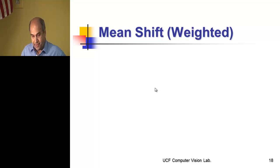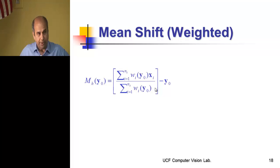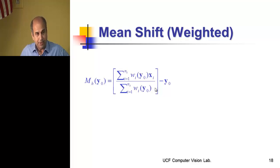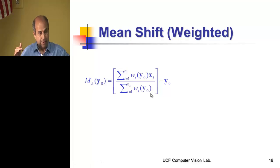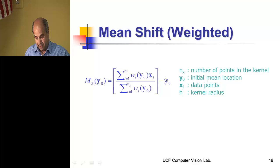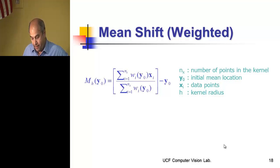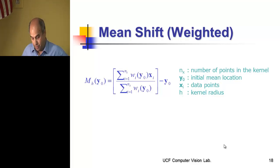The previous mean was equally weighted. A better approach is to assign weights to each point, where the weight wi depends on the distance from the initial location y0 to that point. We then define the weighted average — summing the weighted points and normalizing by the sum of weights, rather than dividing by nx. We subtract y0 from that, and that is the weighted mean shift.